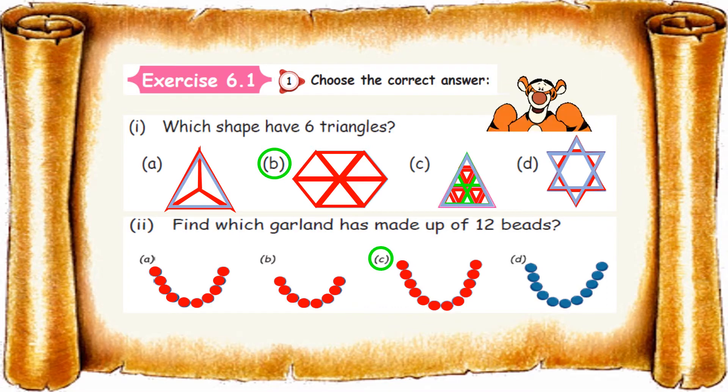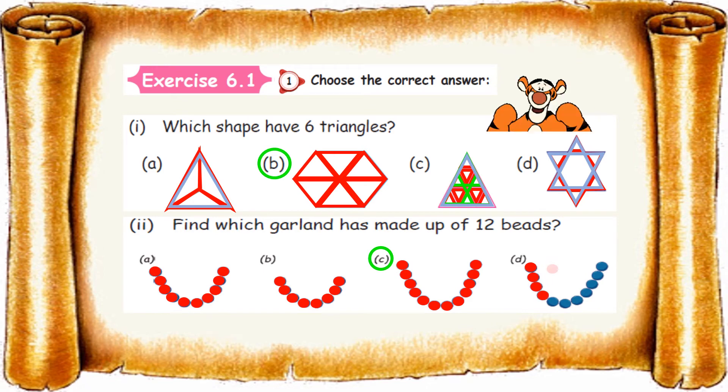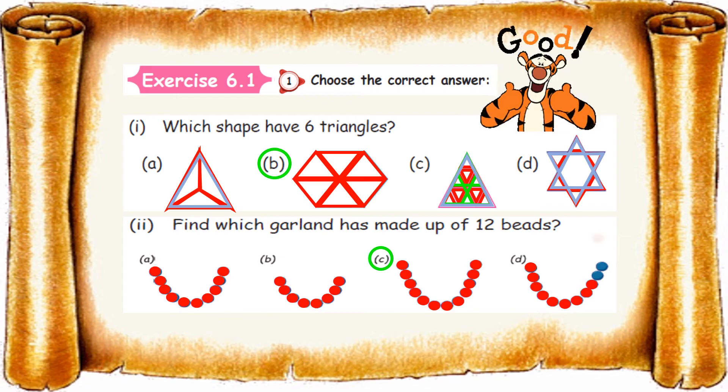Yes, anyway, let us check the D option also. 1, 2, 3, 4, 5, 6, 7, 8, 9, 10, and 11 only is there. So C option is the correct answer here.